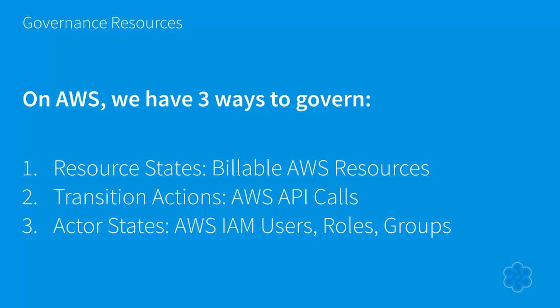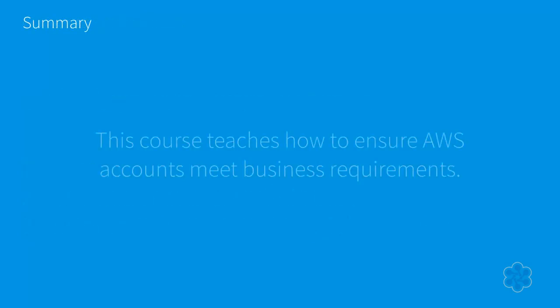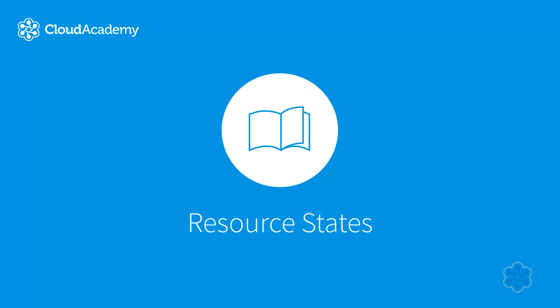We need to govern all three to adequately cover our account, preventing undue business risk, avoiding excess resource spending, and ensuring our account follows best practices and governance policies. In summary, this course teaches how to ensure AWS accounts meet business requirements. We'll learn different techniques to govern those three types of states, starting with the AWS technologies that allow us to review resource states and perform enforcement actions.